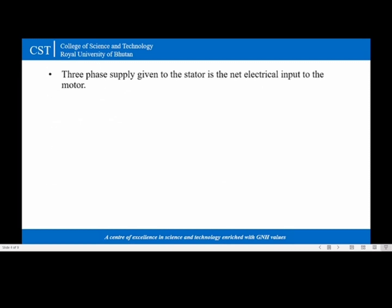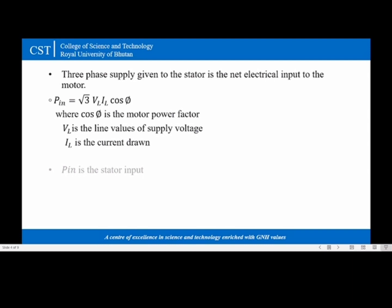The three-phase supply given to the stator is the net electrical input to the motor and it can be calculated with the help of a formula root three VL IL cos phi, where cos phi is the motor power factor, VL is the line values of supply voltage, and IL is the current drawn.